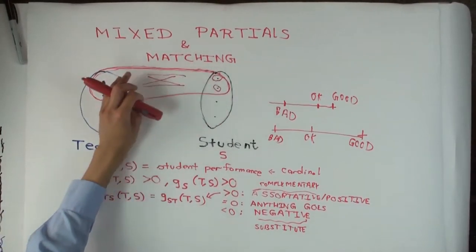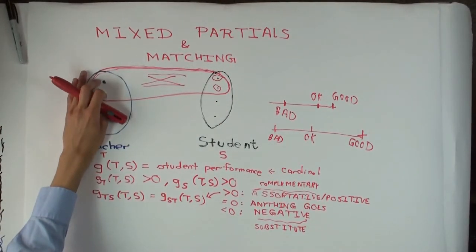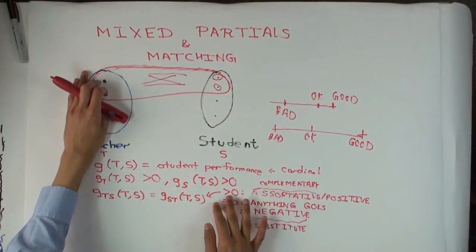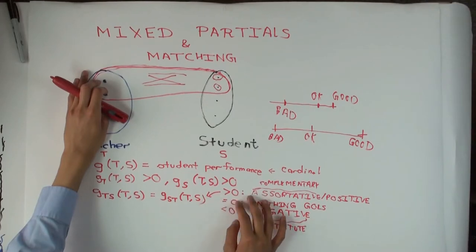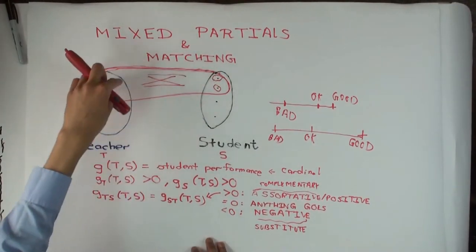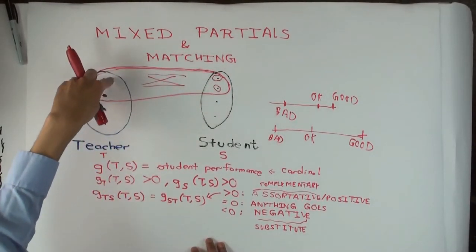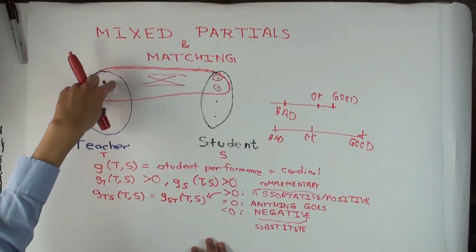the way their bargaining will go will reflect this. If the mixed partial is greater than zero, then the better student will be willing to bargain—if you imagine that teachers are auctioning themselves, then the better student will be willing to pay more in the auction for the better teacher.